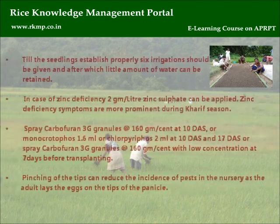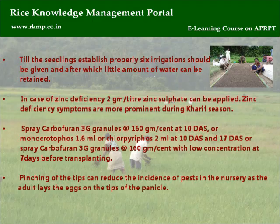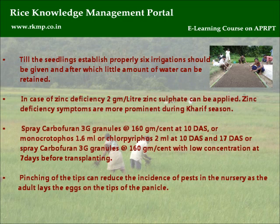The sprouted seed should be broadcasted at 5 kg per cent. Until the seedlings are established properly, 6 irrigations should be given, after which a little amount of water can be retained. In case of zinc deficiency, 2 grams per liter zinc sulfate can be applied; zinc deficiency symptoms are more prominent during kharif season. Spray carbofuran 3G granules at 160 grams per cent at 10 DAS, or monocrotophos 1.6 ml or chlorpyrifos 2 ml at 10 DAS and 17 DAS.